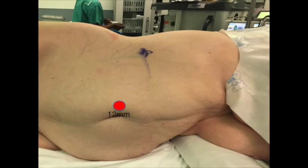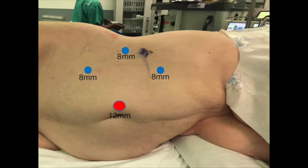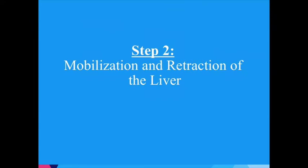The abdomen is insufflated with a Veress needle. A 12-millimeter camera port is placed peri-umbilically. Two 8-millimeter robotic trocars are placed along the mid-clavicular line near the costal margin and the iliac spine. A third robotic trocar is placed laterally near the iliac crest. A 12-millimeter assistant port is placed at the midline 5 centimeters caudal to the camera port. A 5-millimeter trocar is placed below the xiphoid process. Once all trocars have been placed, the robot is docked.